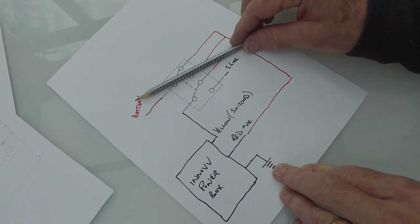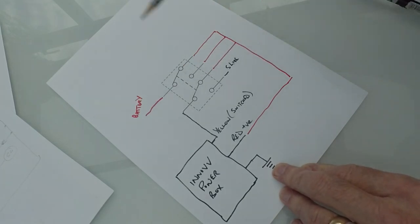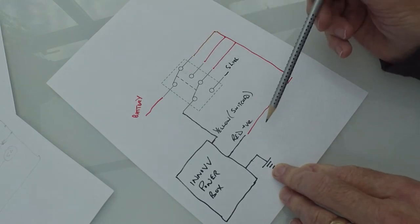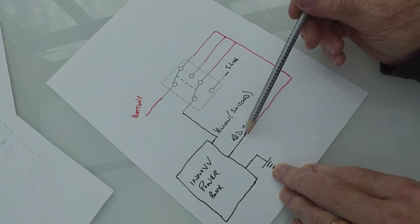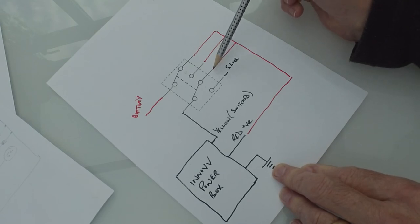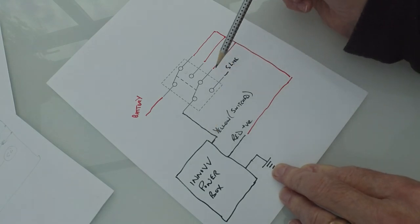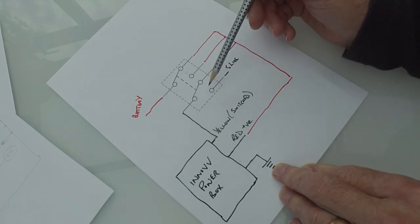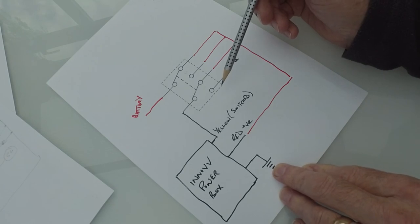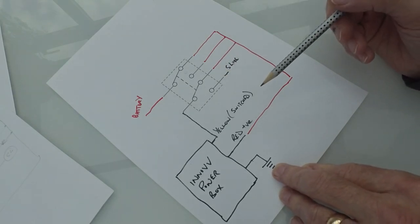And then in the lower position where you're down here, you've got positive onto the positive lead of the power box. But this time, you've got a switched live onto the yellow lead of the power box. So that's your normal riding mode. It will come on when the ignition comes on and off when the ignition is turned off. That's the way that Inovi recommend you wire it up.